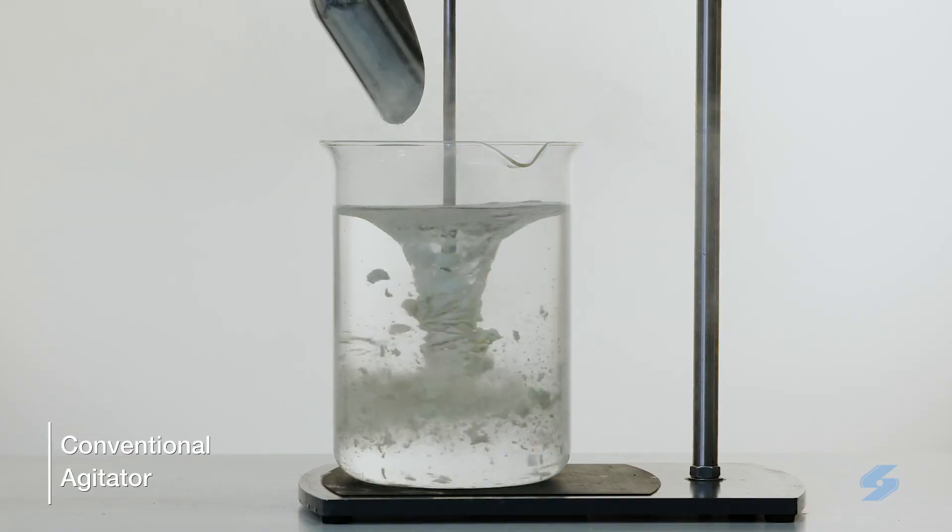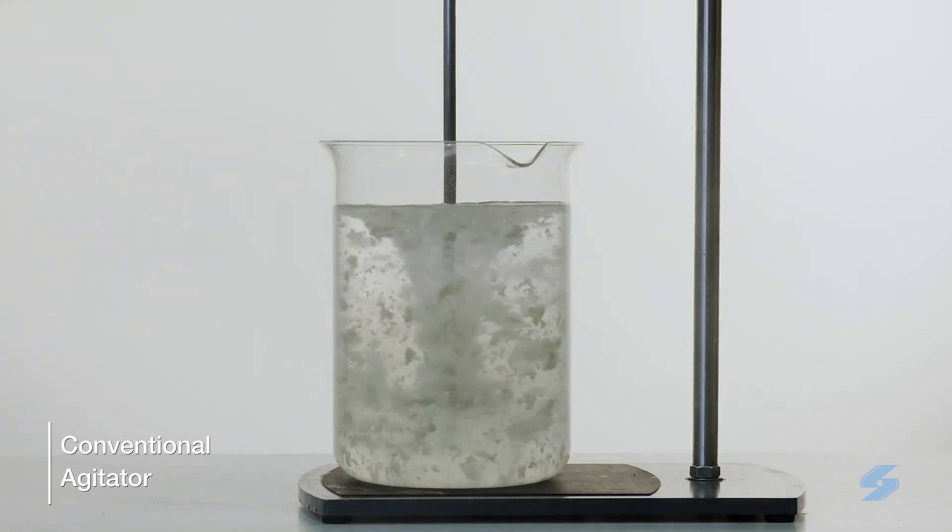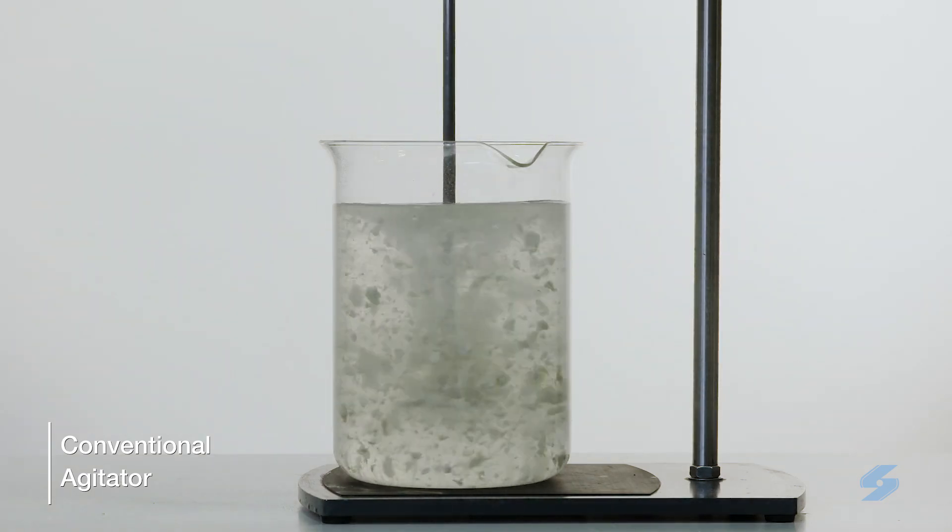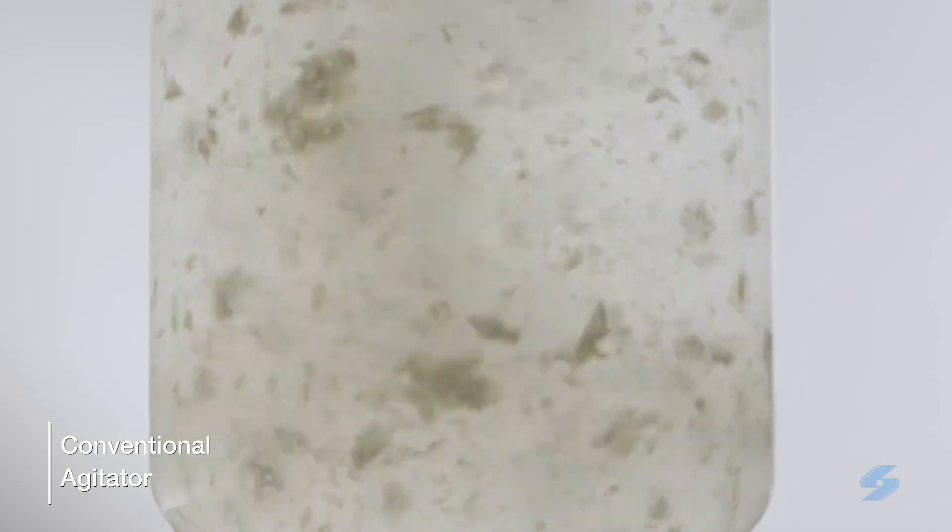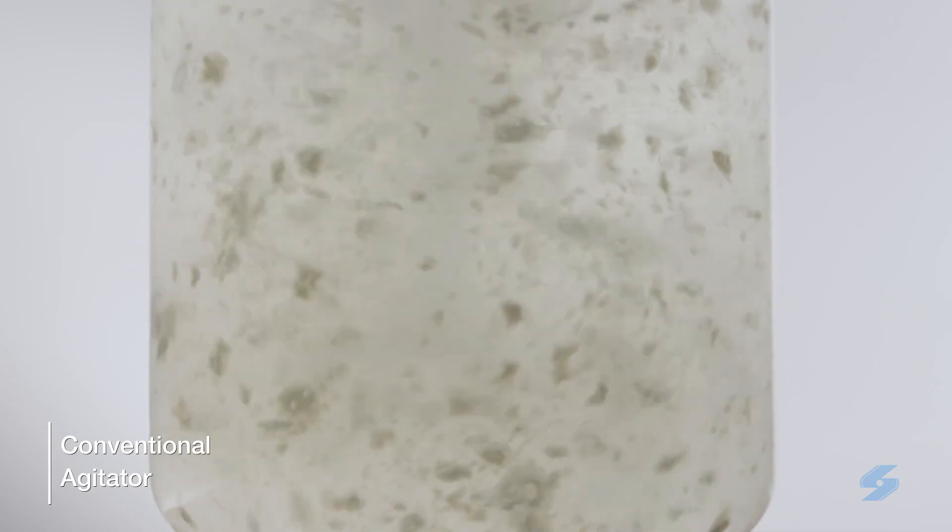Another common problem is dispersing gums and thickening agents with a conventional agitator. Thickening agents must be added slowly and carefully over a long period of time in order to prevent the kind of agglomerates seen here. Once such agglomerates have been formed, the agitator cannot disperse them.